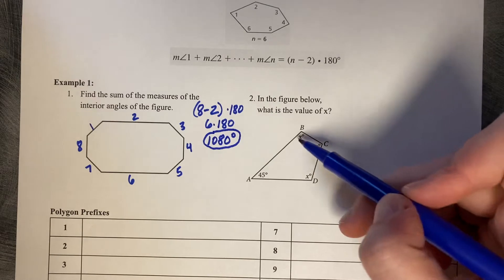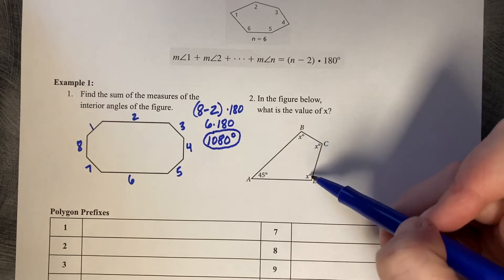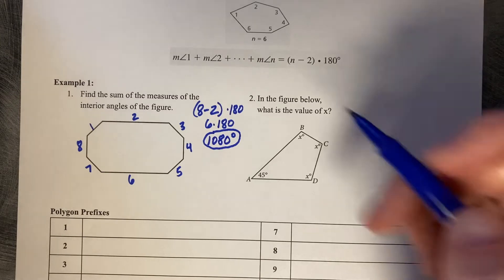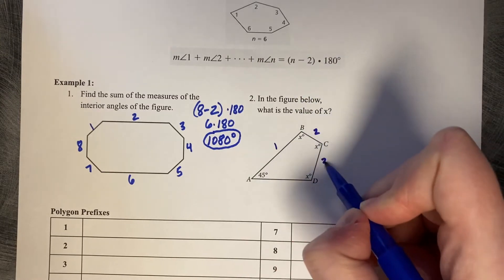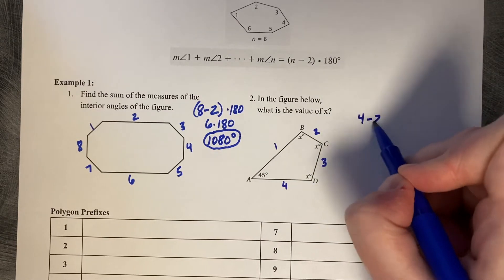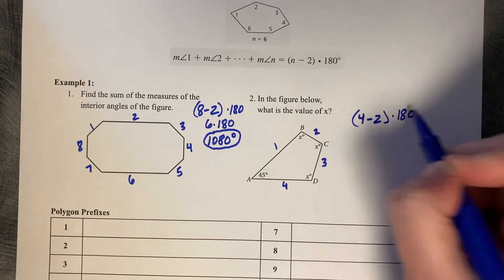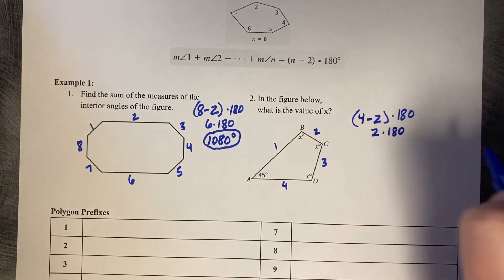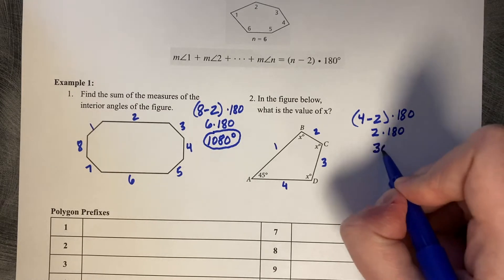In the figure below, what is the value of x? So it's in three corners, and I know one of them is 45 degrees. This is a quadrilateral. Four minus two times 180. Four minus two is two times 180. So how many degrees are there in this quadrilateral? 360 degrees.